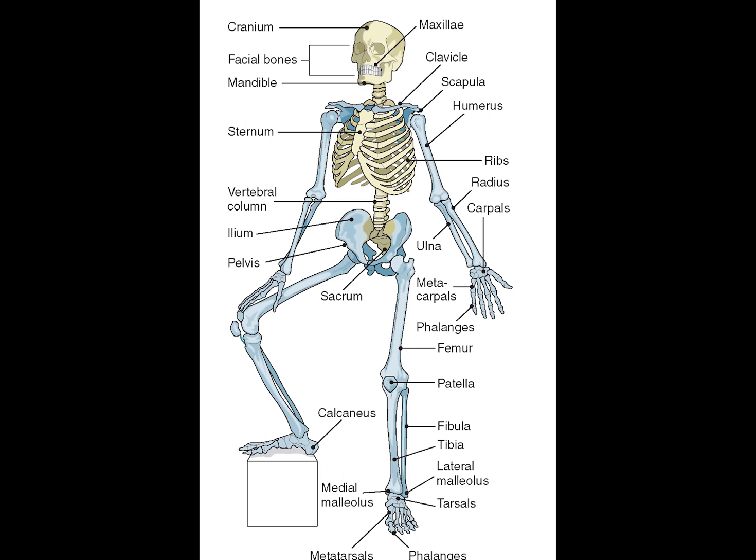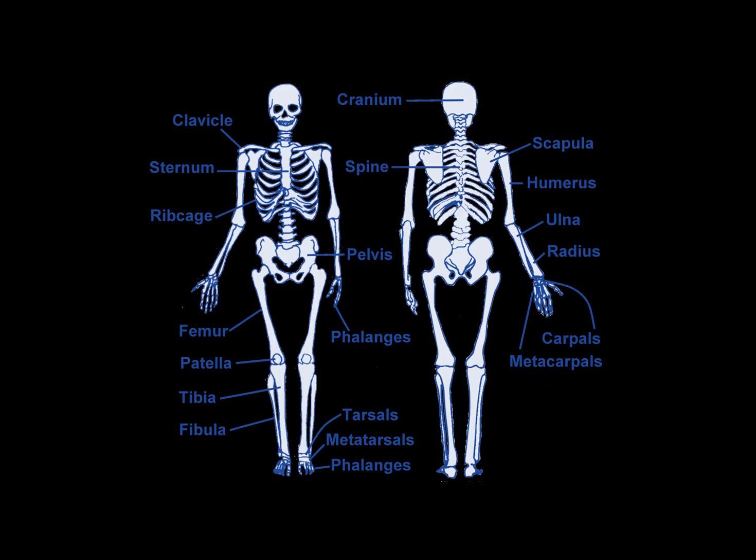Most cells in bones are either osteoblasts, osteoclasts, or osteocytes. Bone tissue is a type of dense connective tissue. One of the types of tissue that makes up bone tissue is mineralized tissue, and this gives it rigidity and a honeycomb-like three-dimensional internal structure. Bones also produce red and white blood cells and serve as calcium and phosphate storage at the cellular level.